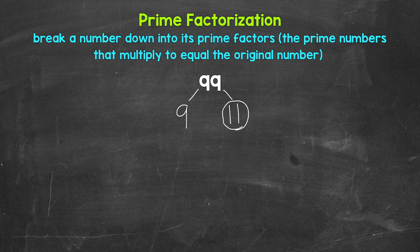Now 9 we can break down. So we need to think of factors. Well, we know 3 times 3 is 9. 3 is a factor of 9. So let's break 9 down into 3 and 3.